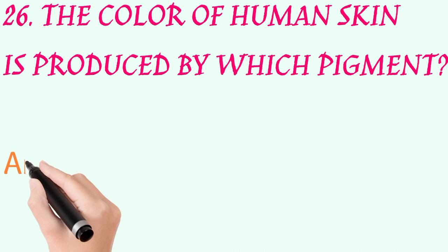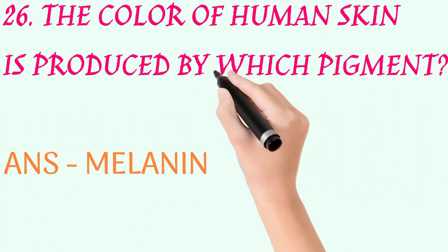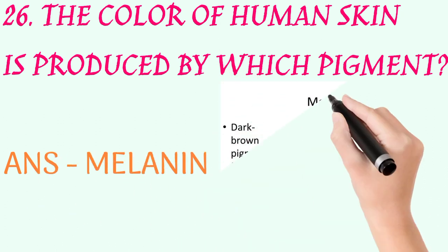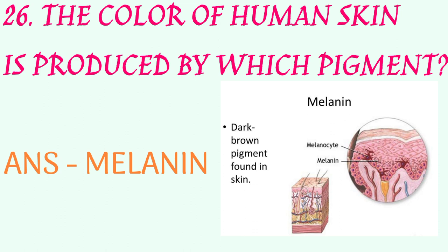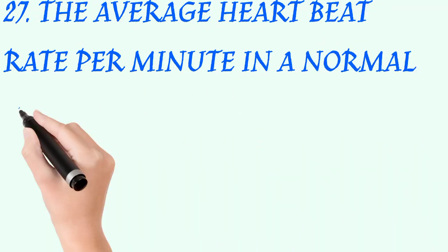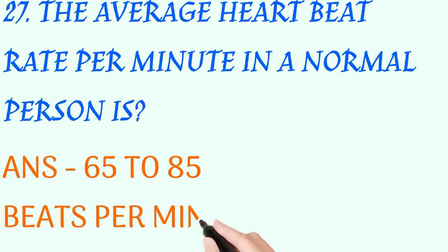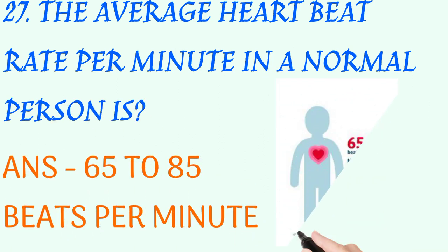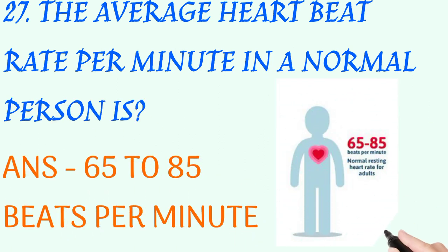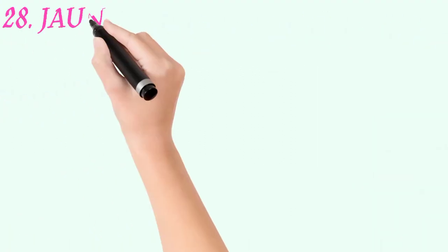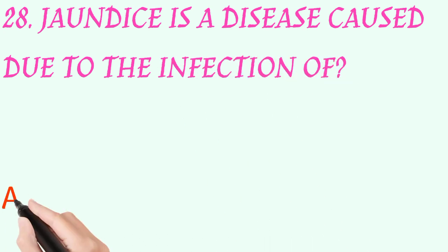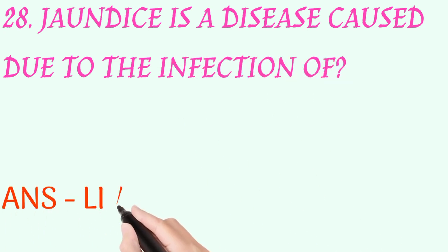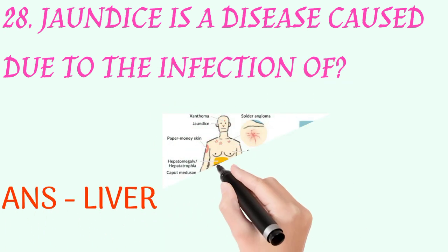The color of human skin is produced by which pigment? Answer: melanin. The average heartbeat rate per minute in a normal person is? Answer: 65 to 85 beats per minute. Jaundice is a disease caused due to the infection of? Answer: liver.